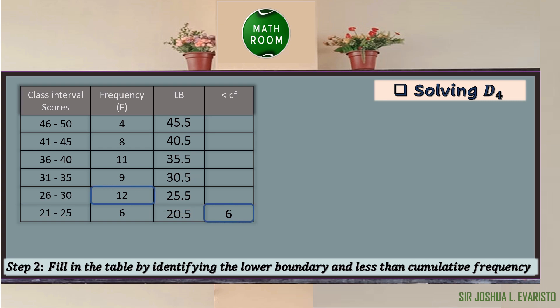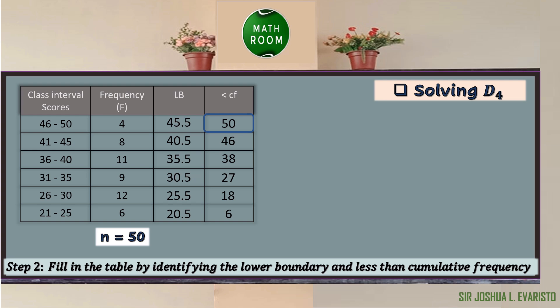We add consecutive frequencies: 6 plus 12 equals 18; 18 plus 9 is 27; 27 plus 11 is 38; 38 plus 8 is 46; 46 plus 4 is 50. The last cumulative frequency value also gives us the total frequency, so n equals 50. To verify, adding all frequencies: 4 plus 8 plus 11 plus 9 plus 12 plus 6 equals 50. By counting, the size of the class interval is 5.